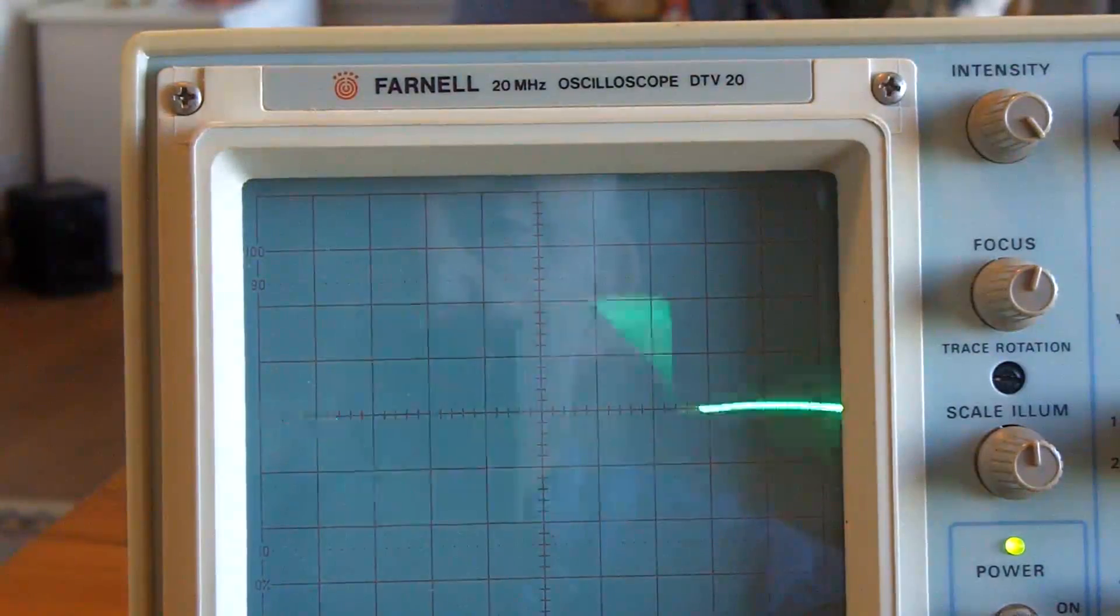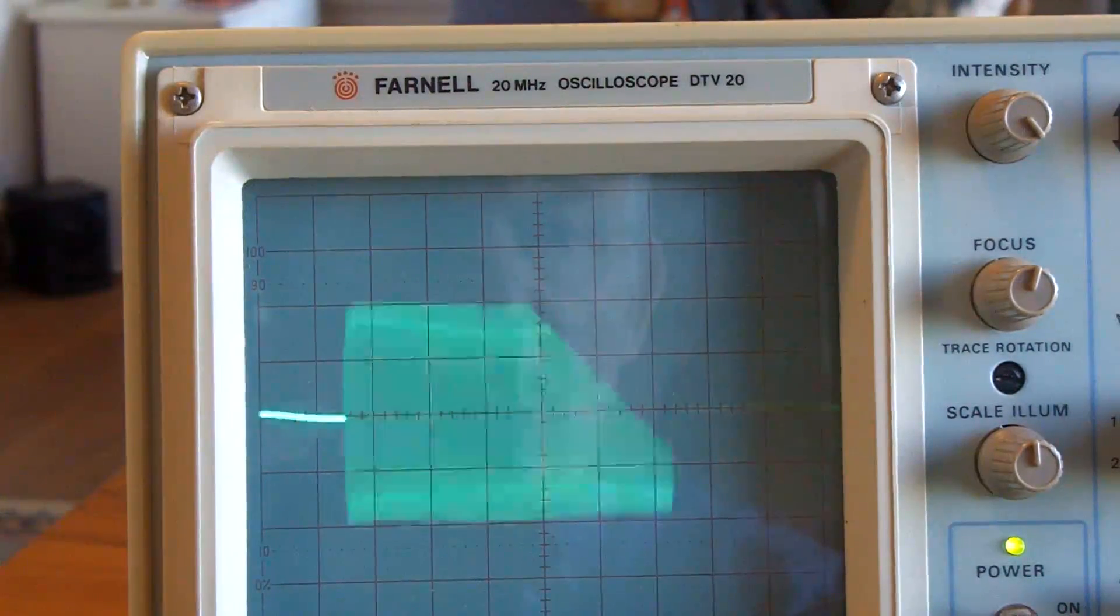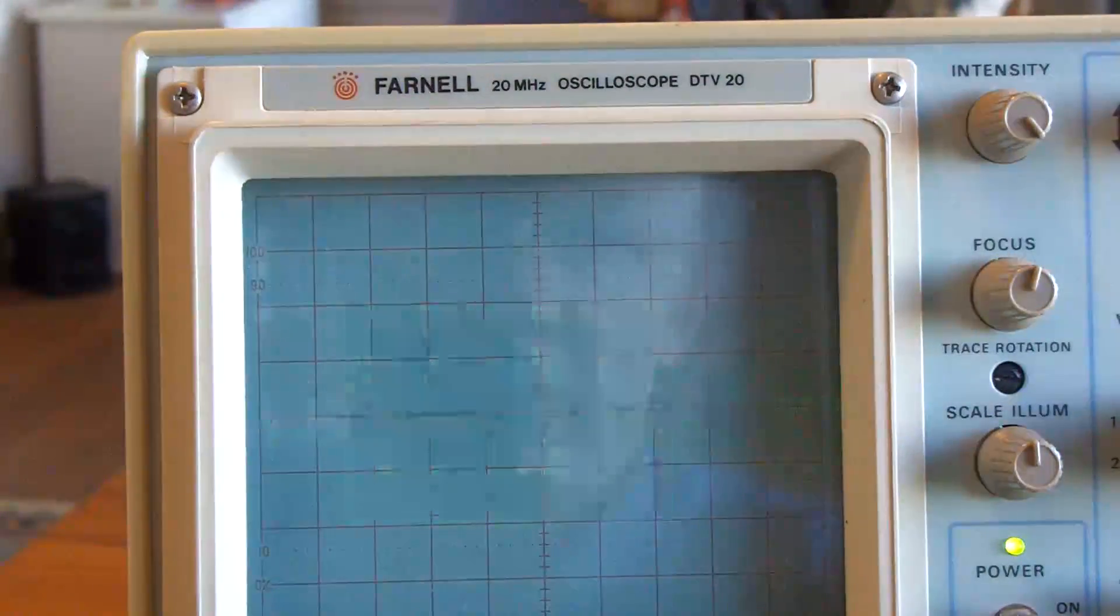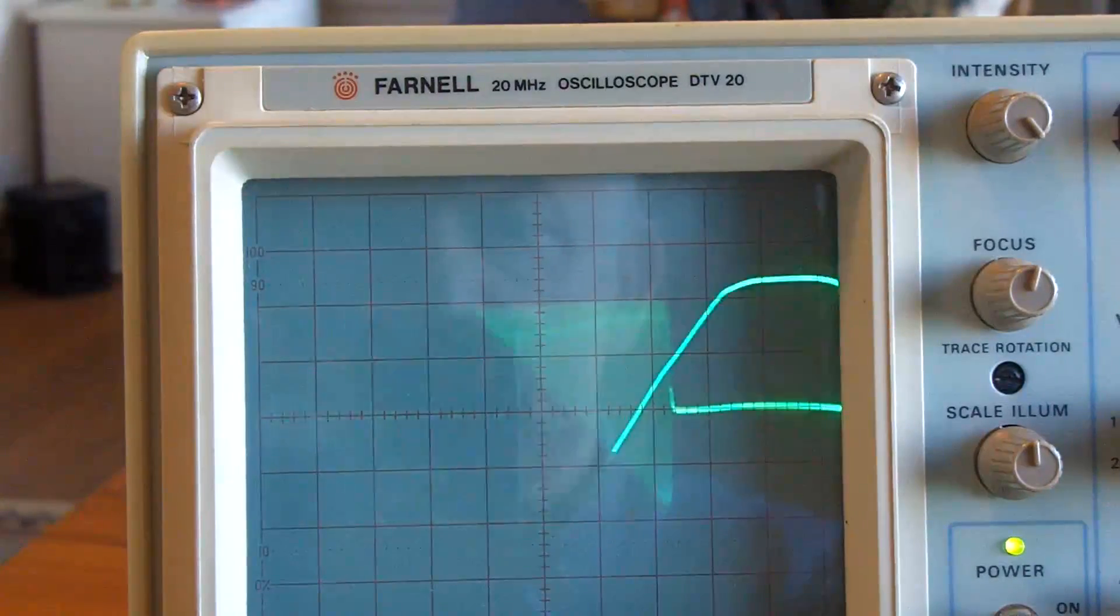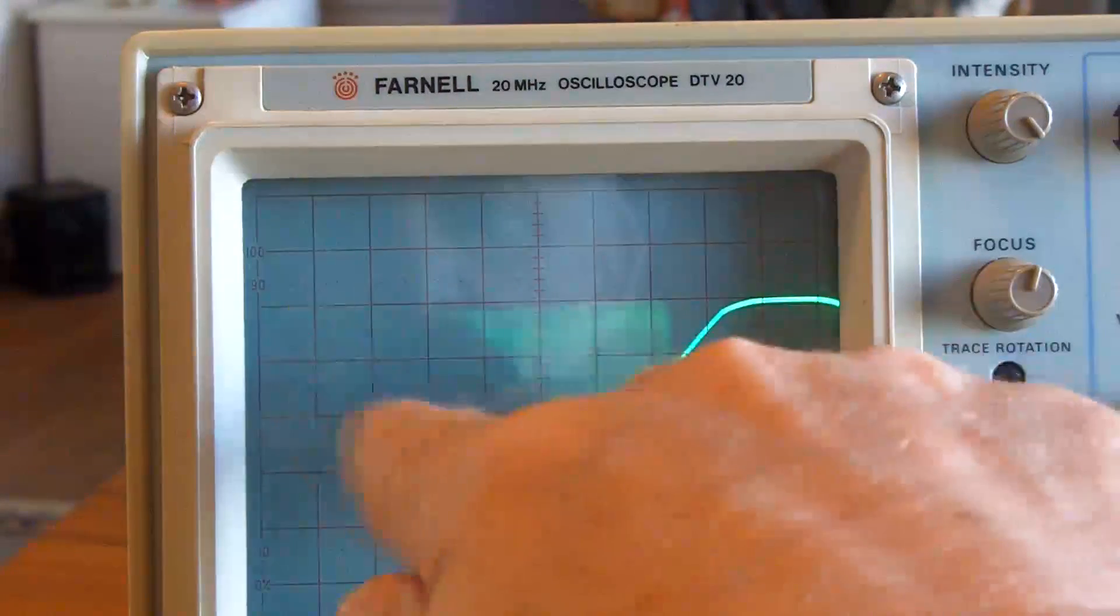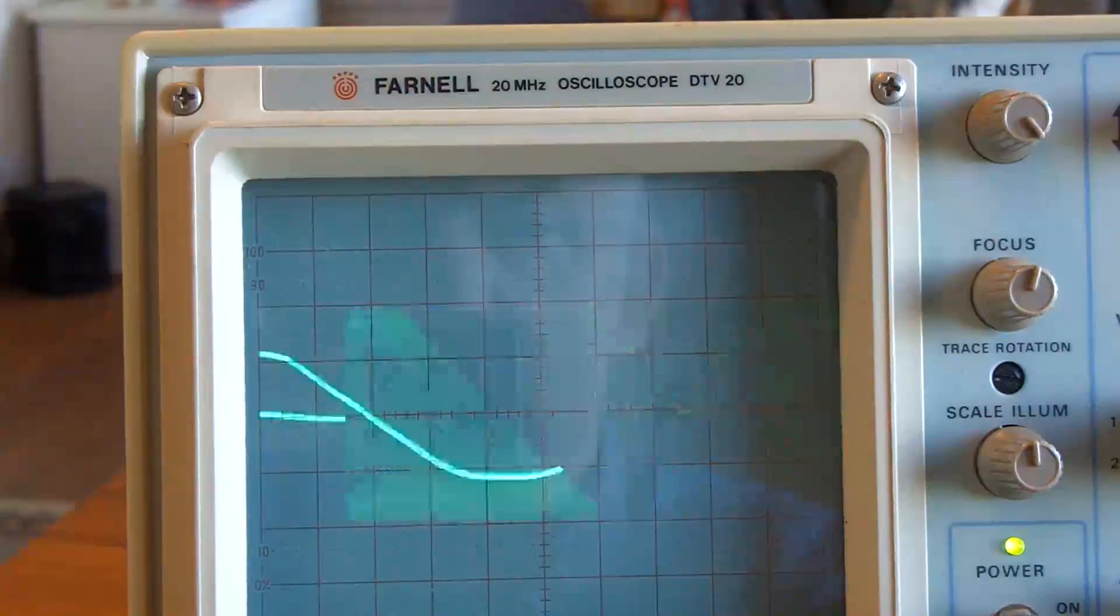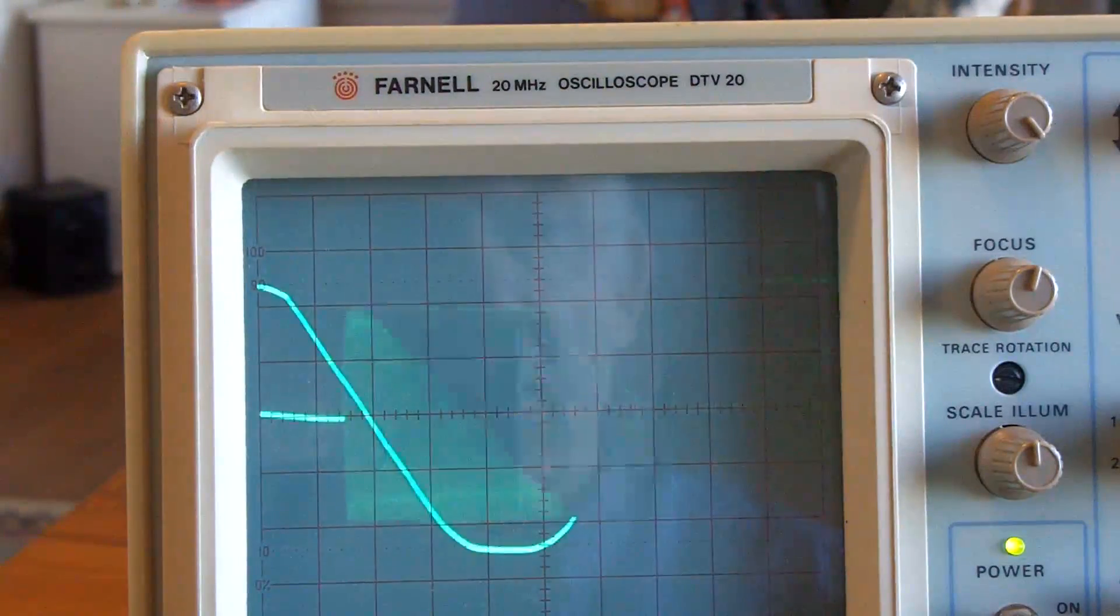And if I adjust the scan width down there, that again doesn't do anything to that trace. It will presumably do something to that trace. Just put the other trace in. So I would have expected to have seen something happening there.